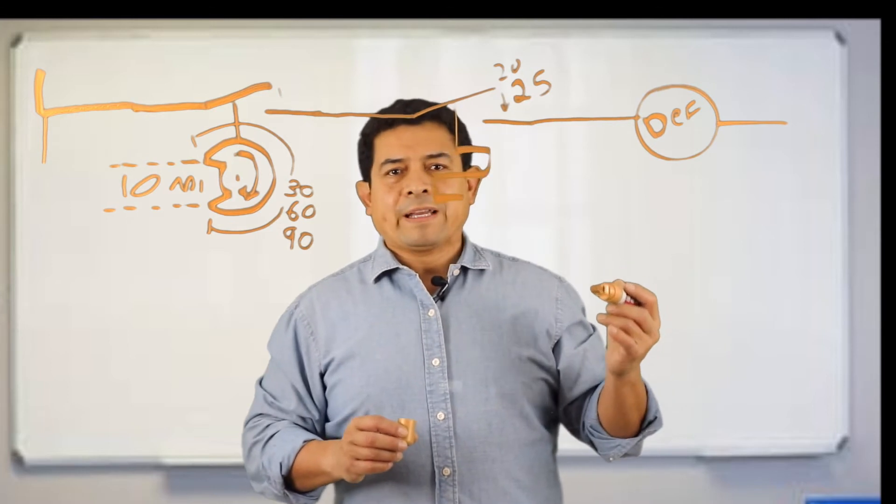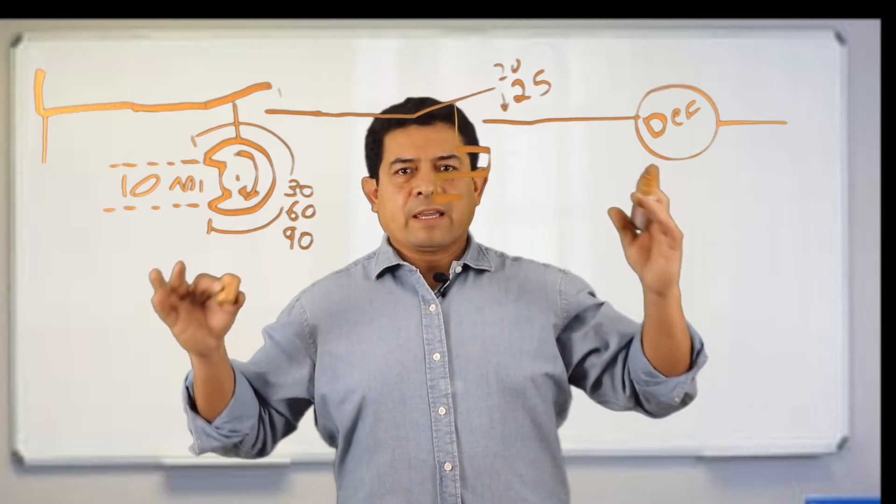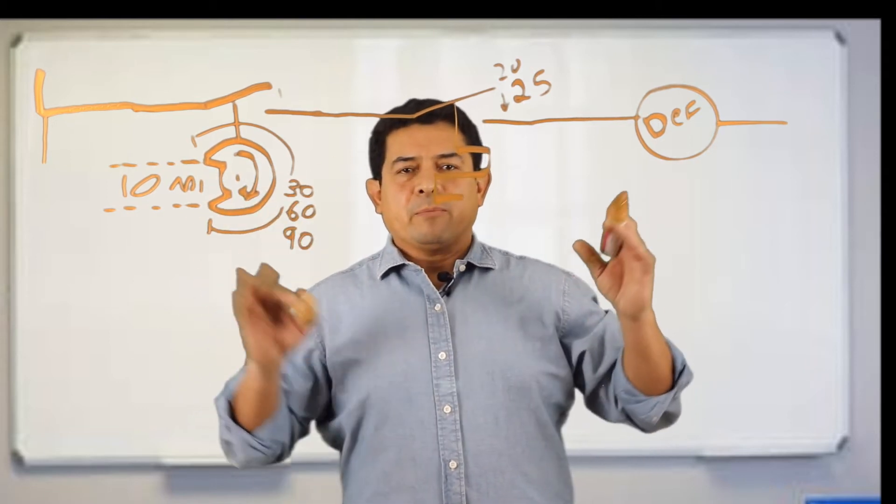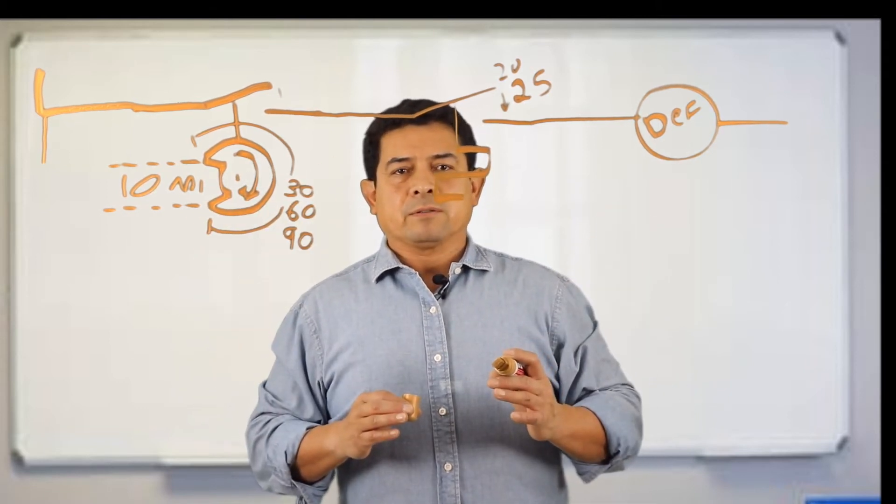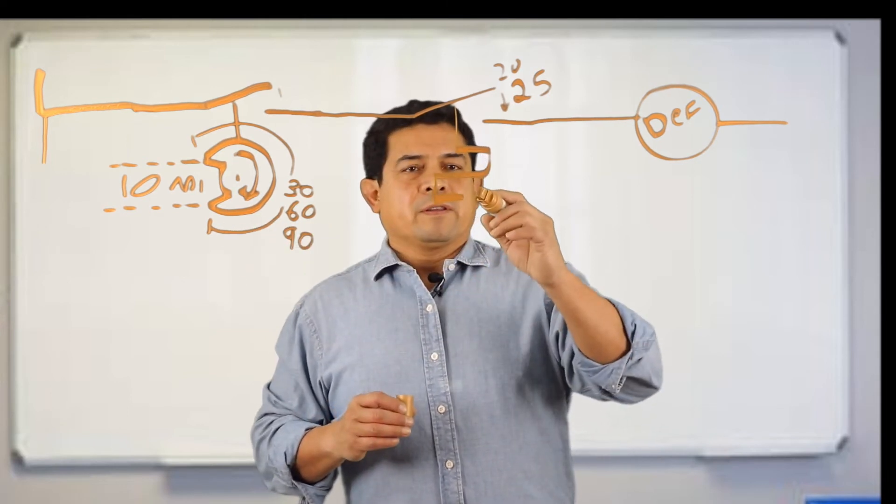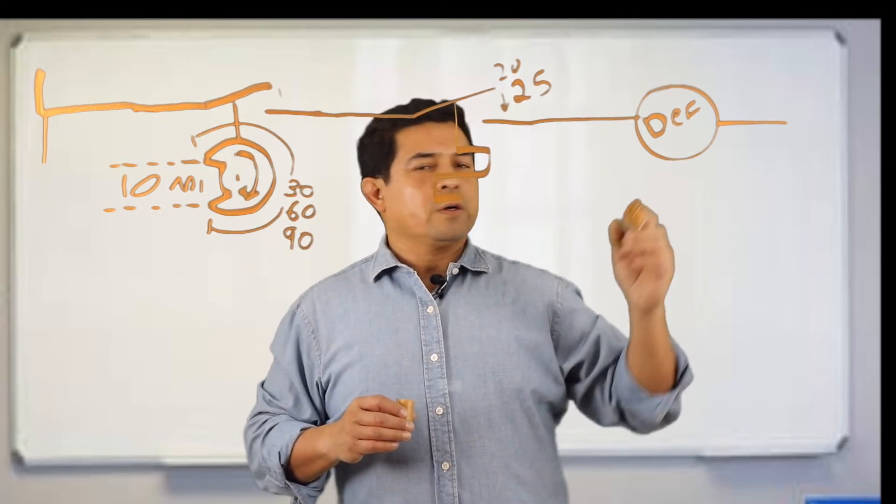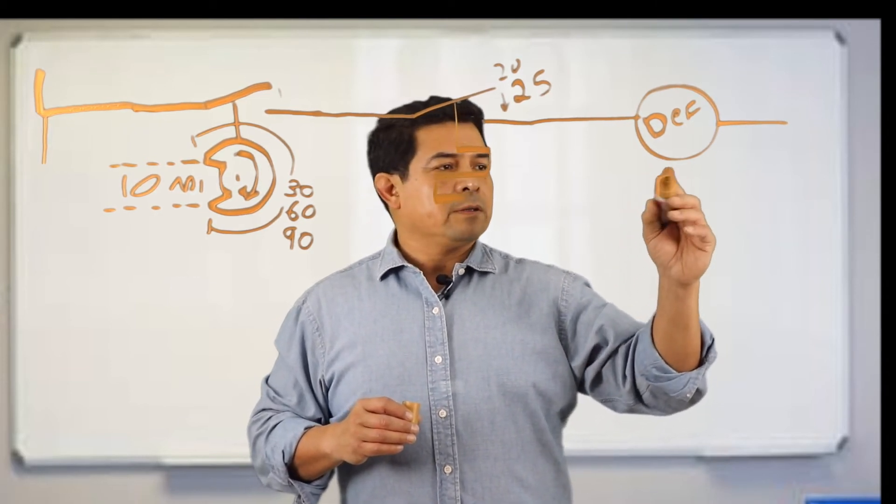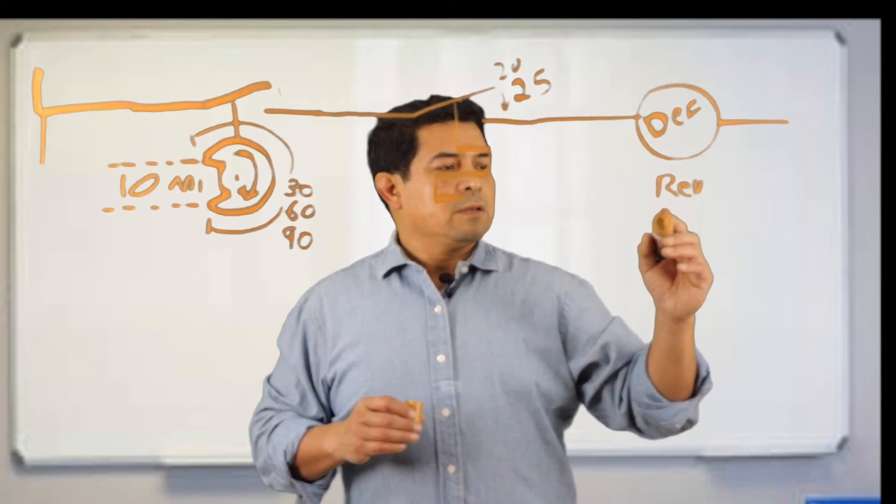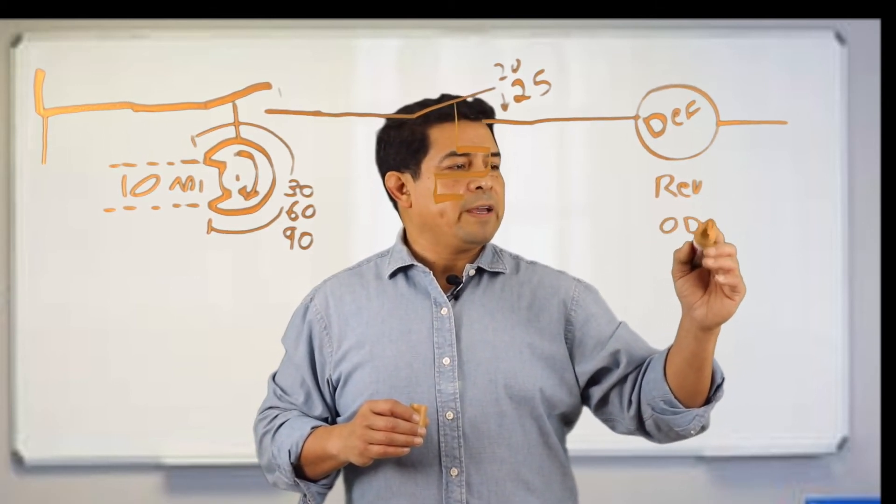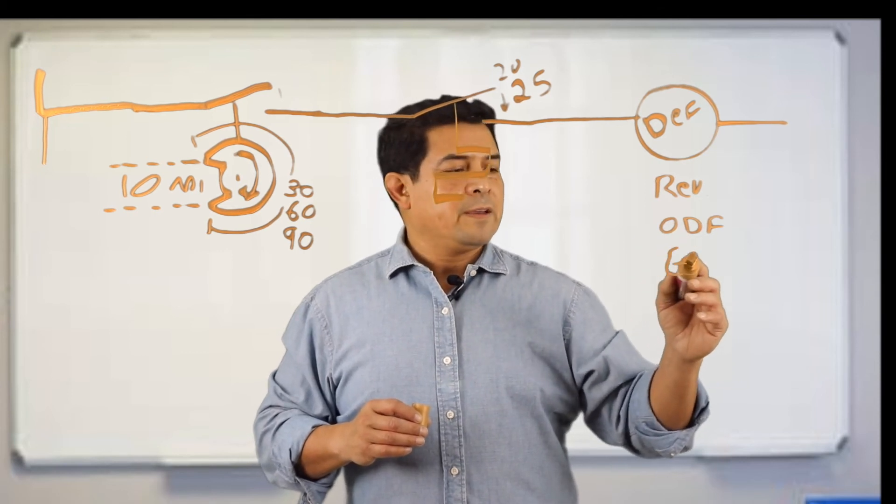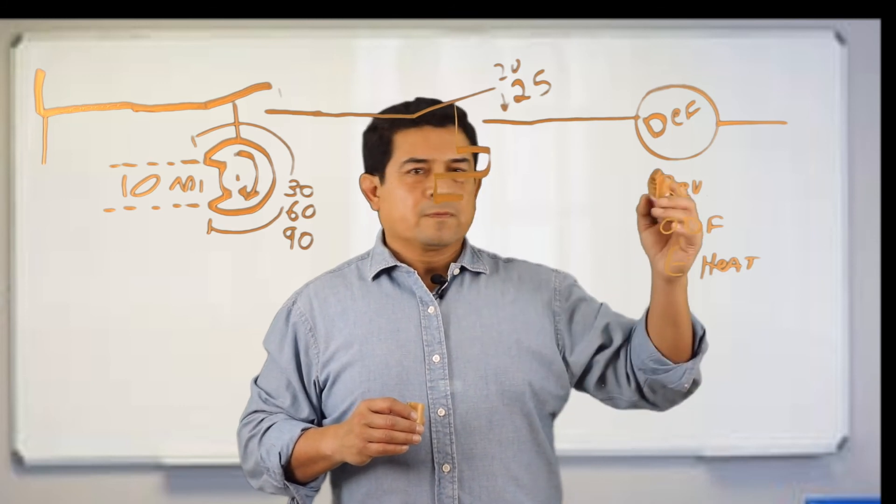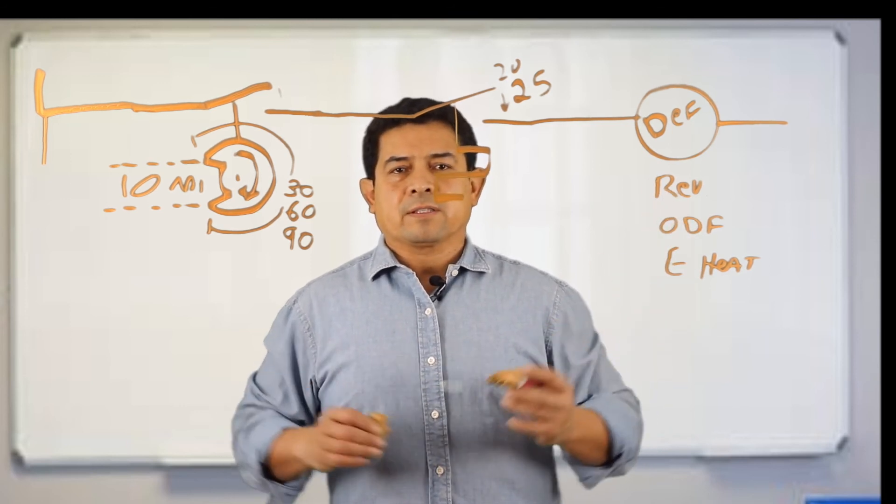We're going to try to keep things simple. Instead of thinking about the entire board, we're going to think about this right here, because this is what happens in defrost. The time has to happen, the temperature has to happen for it to go into defrost. The reversing valve shifts, the outdoor fan shuts off, and the electric heat comes on. This is your defrost cycle and how it happens.